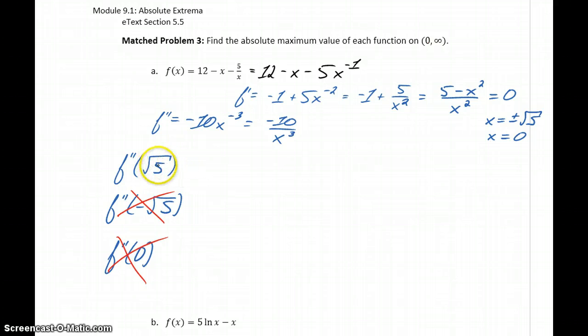We only have one value that we need to consider, which is the second derivative of our function evaluated at the square root of 5, which will give us negative 10 over the square root of 5 to the 3rd power. We don't even really need to figure out what that is exactly equal to. It's enough to know that this is a negative sign, which makes that a negative value.